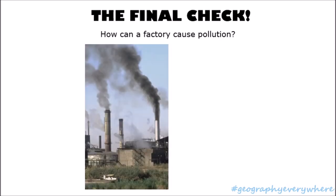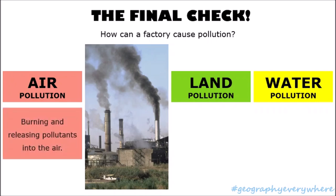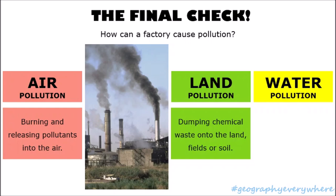How can a factory like this cause air, land and water pollution? Pause the video and allow yourself 2 minutes to work them out. When you're done, press play and check your answers. A factory can cause air pollution because it burns and releases pollutants into the air. A factory can cause land pollution by dumping chemical waste onto the land, fields or soil, which might eventually end up in the water or in the plants and animals that we eat. Water pollution can be caused by releasing chemicals into rivers or the sea.